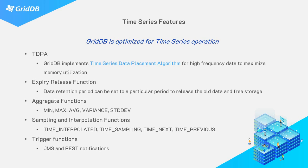The expiry release function, for example, allows for stale data to be removed after a certain amount of time. Aggregation functions provide common statistical calculations, while the sampling functions allow convenient methods of accessing data at intervals other than which it was stored.